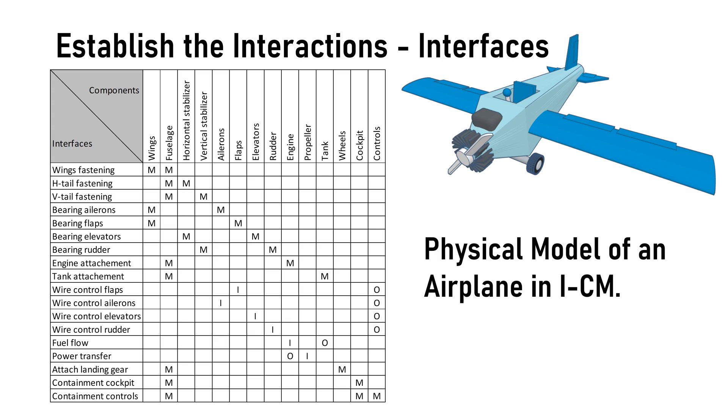As we can see, most of the interfaces are of structural matter, mechanically connecting the different parts. Some of them are however not strictly static, like the bearings of the control surfaces: the ailerons, flaps, elevators, and the rudder. We can see this in the interfaces names. We have a logically defined directional interface from the control levers to the control surfaces, a material flow of fuel from the tank to the engine, and power transfer from the engine to the propeller.